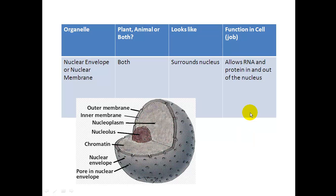On the side note, you have the next organelle would be the nuclear envelope or the nuclear membrane. Again, both plants and animal cells have it, not prokaryotic cells. It surrounds the nucleus, and it allows RNA and protein in and out of the nucleus through the nuclear pores.